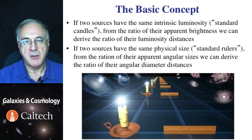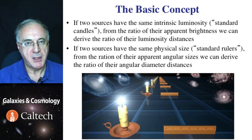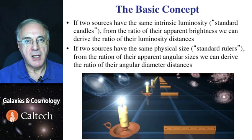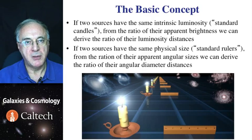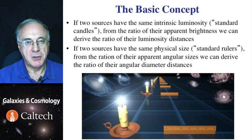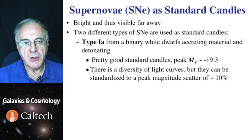Similarly, if we have objects of a standard size, like a ruler is always the same size, and observe it at different distances from us, the ratio of the angular diameters will be equal to the ratio of the angular diameter distances. So we could use standard rulers to determine relative distances to objects we're looking at. So how do supernovae play in this?